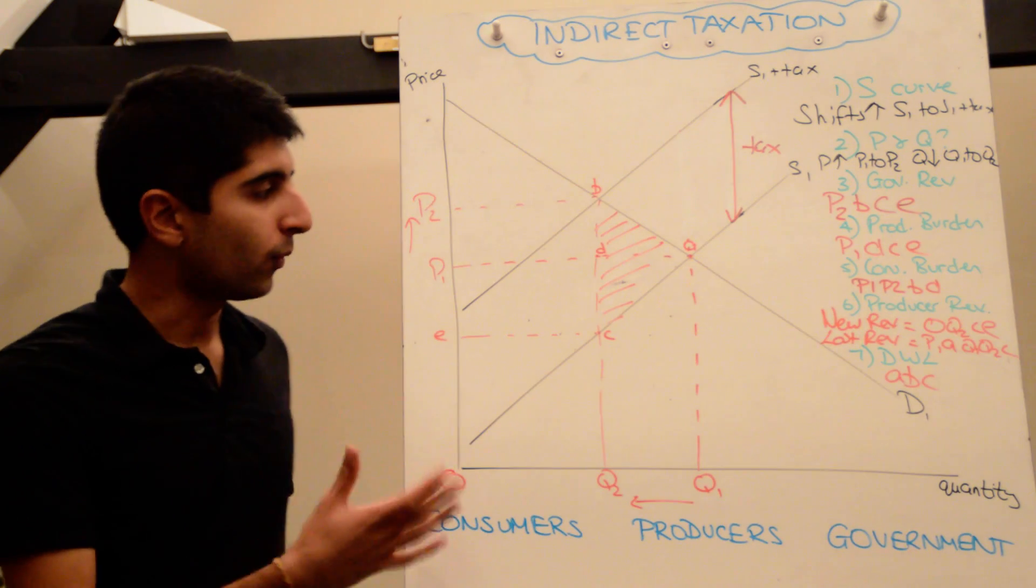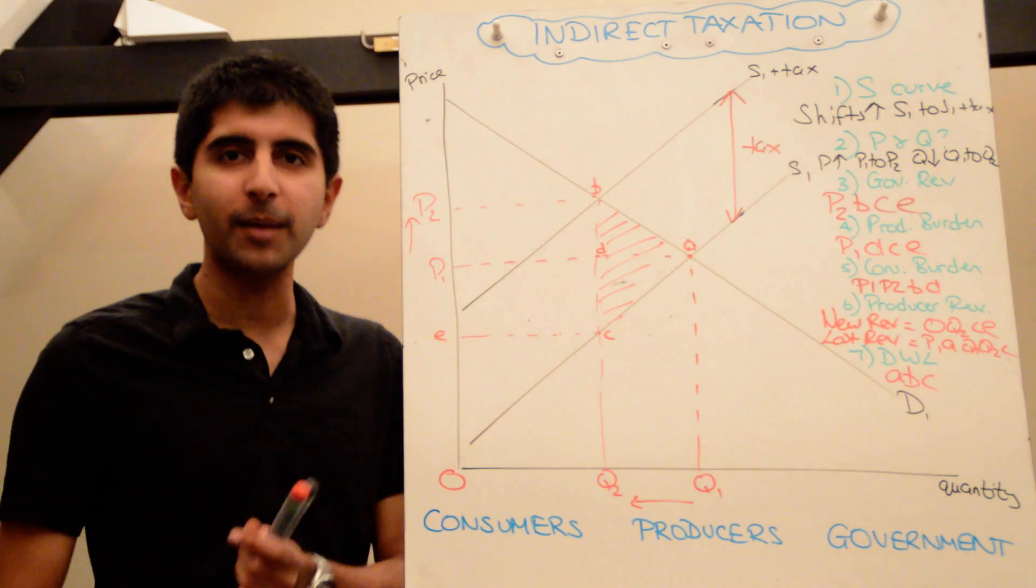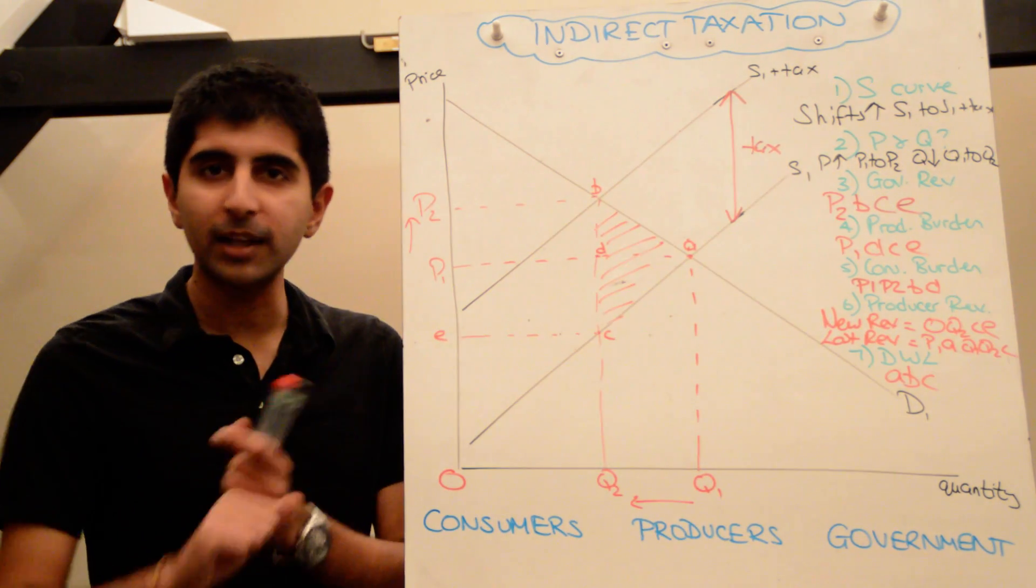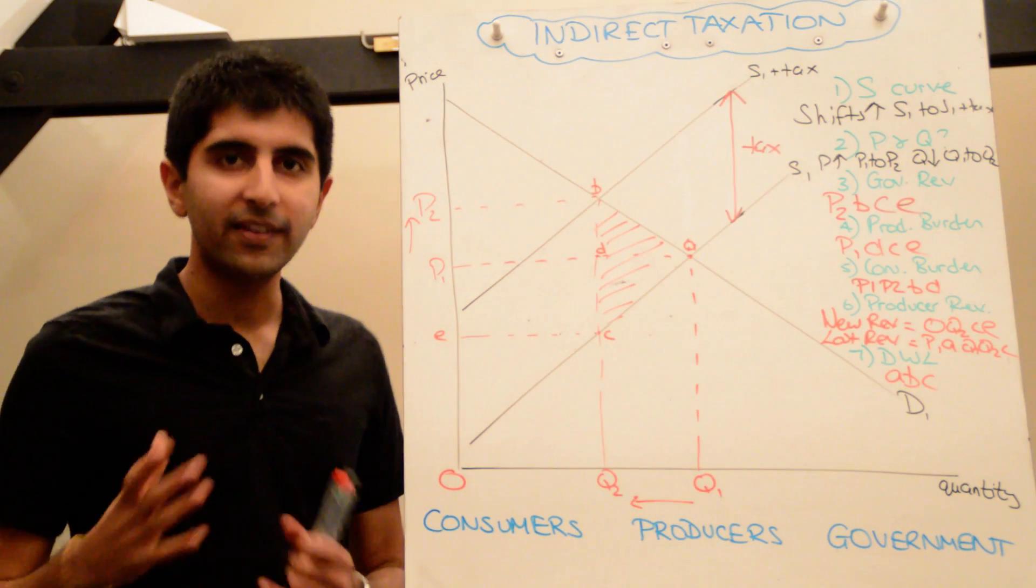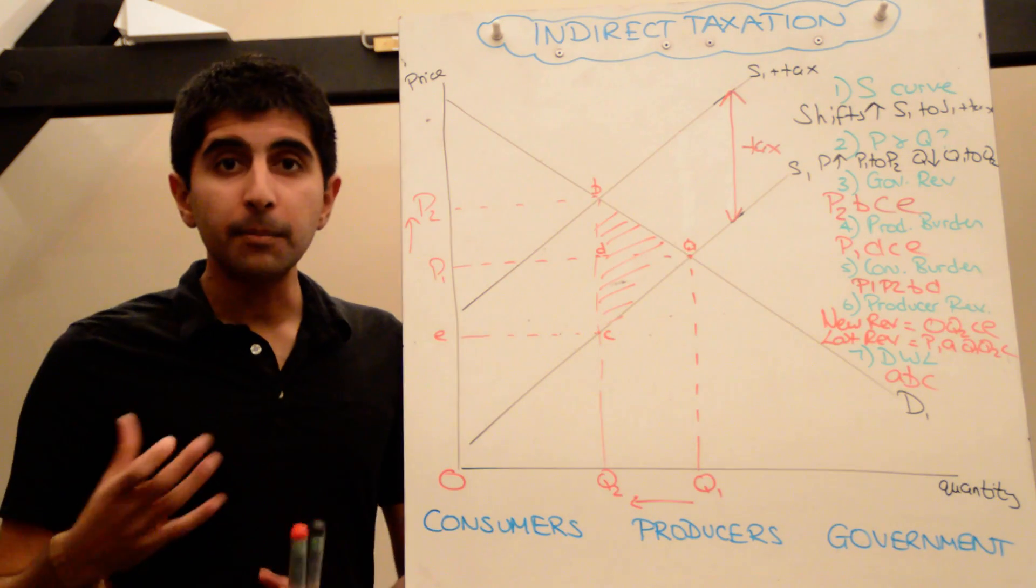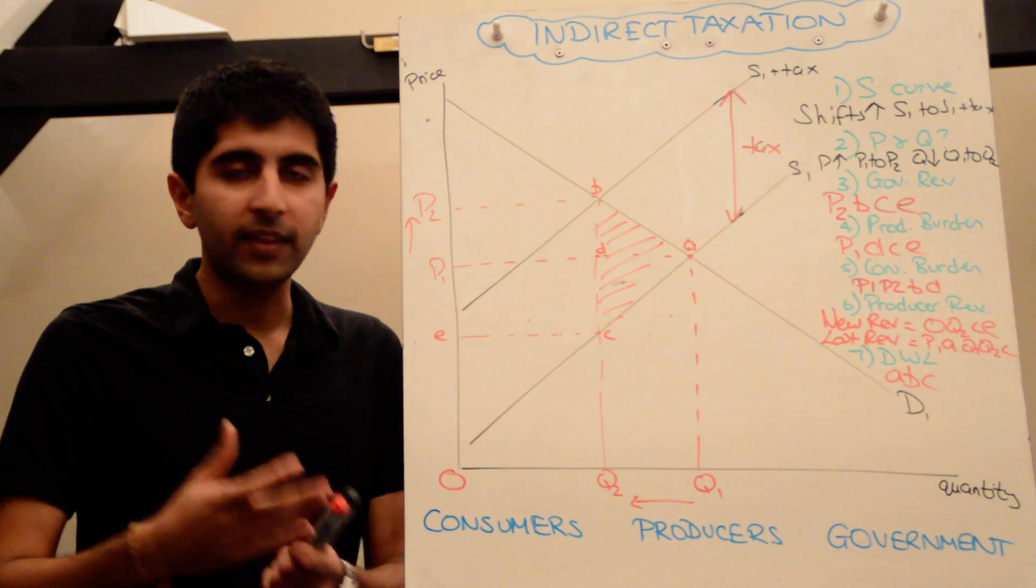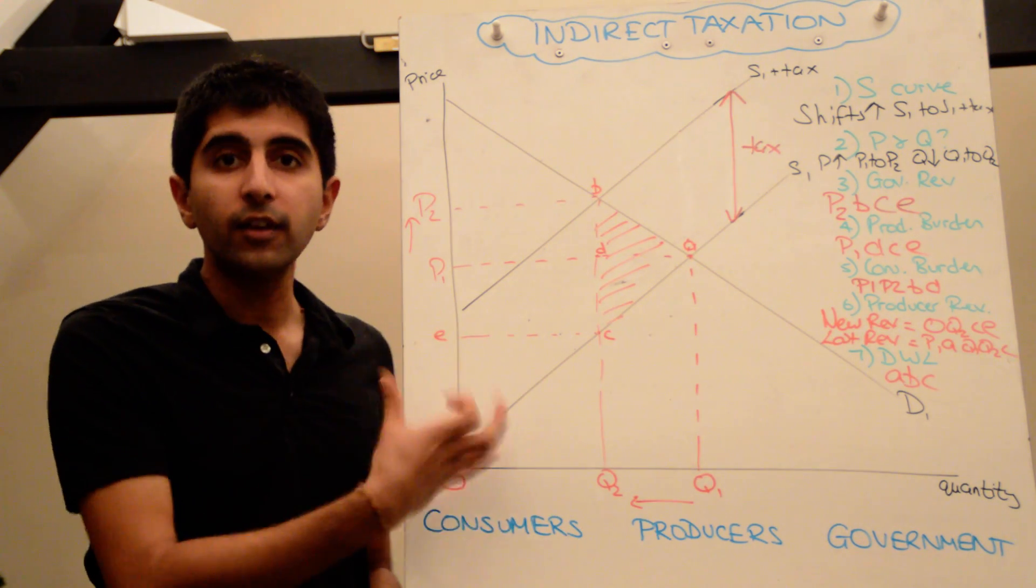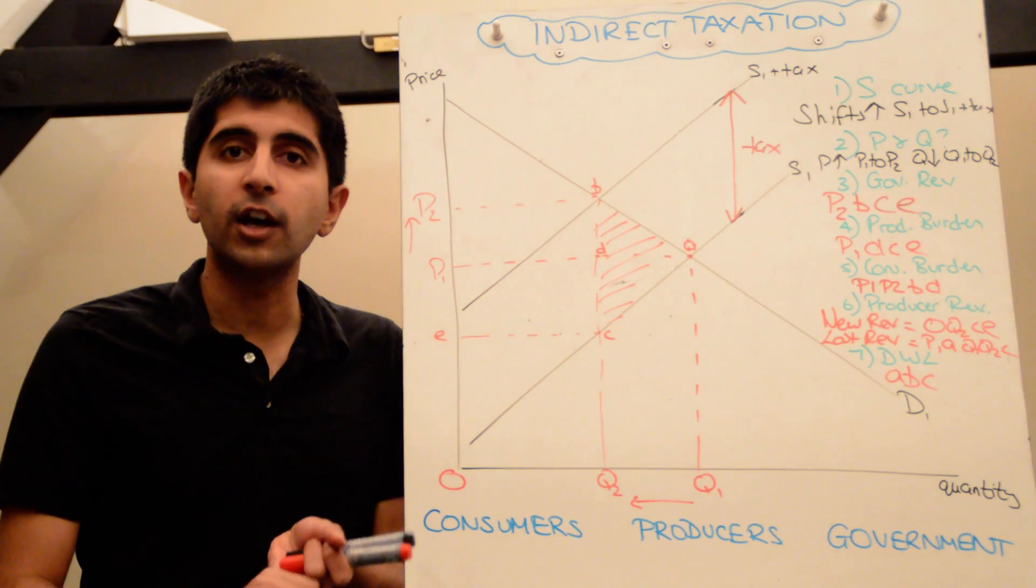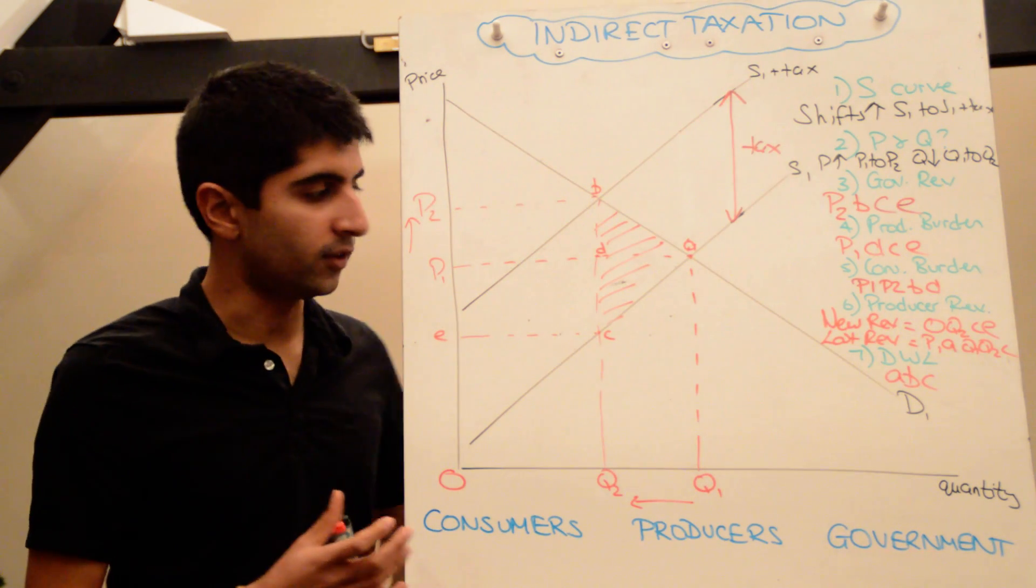Producers don't like a tax either. Why? Because it eats into their producer surplus. The profits they're making actually end up falling. Look at revenues: revenues have fallen massively. They hate it, they absolutely hate it. They would like it more if demand was inelastic because then they can pass on most of the tax to consumers. But it means they are going to suffer a fall in revenue. They may have to cut jobs as a result, which is not good for producers.